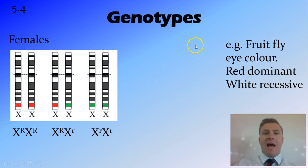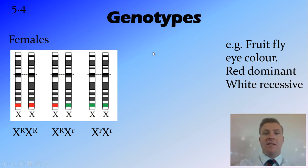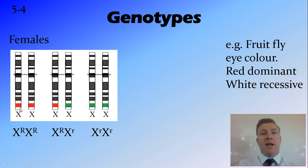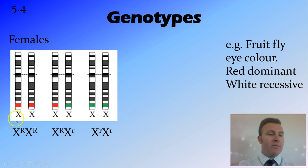Looking at the possible genotypes, I'm going to use the example of eye colour in fruit flies, just because that's what Thomas Morgan did and how he discovered sex linkage. You just need to know that red is dominant to white, so white is recessive. It's an X-linked trait, so the allele for this is found on the X chromosome and doesn't have a counterpart on the Y chromosome.